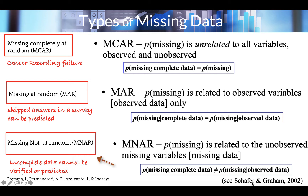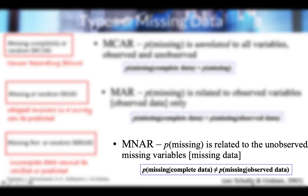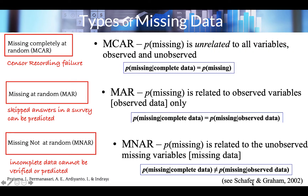The third type is Missing Not At Random (MNAR): the missingness probability depends on the variable itself, and the incomplete data typically cannot be verified or predicted. For example, consider an incomplete table with IQ scores — the missing scores might be low IQ or high IQ, but you have no mechanism to verify them. The formula is: P(missing | complete data) ≠ P(missing | observed data).